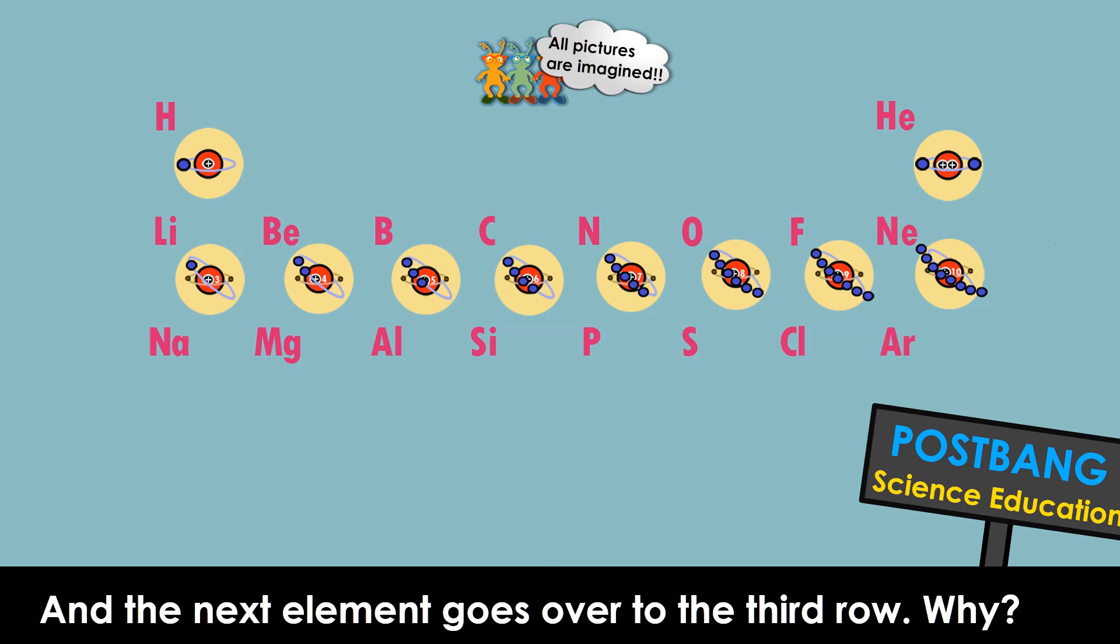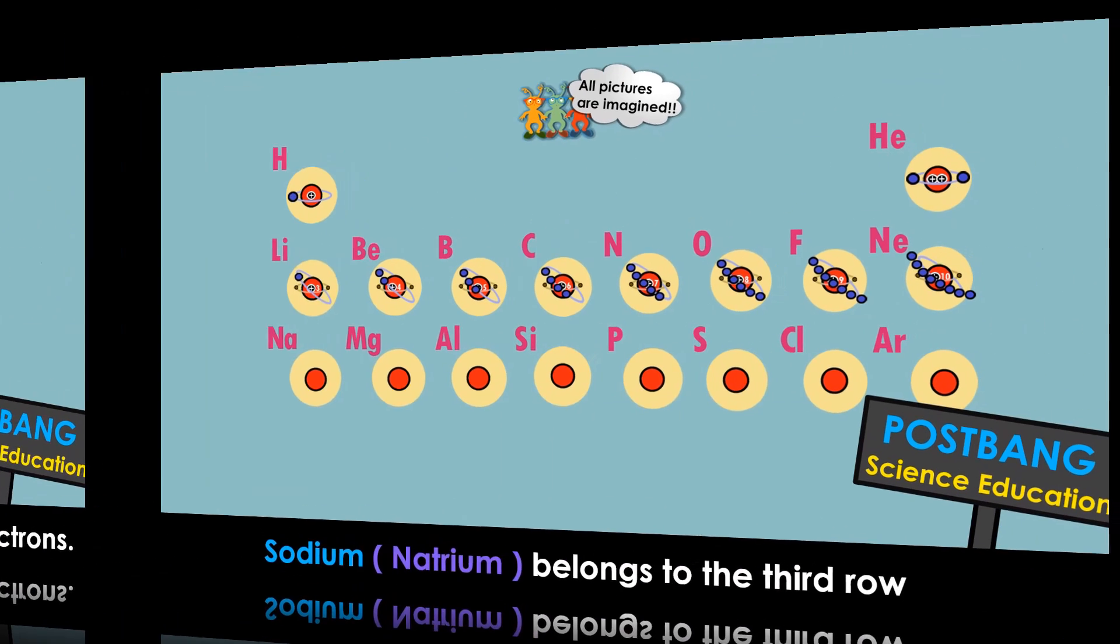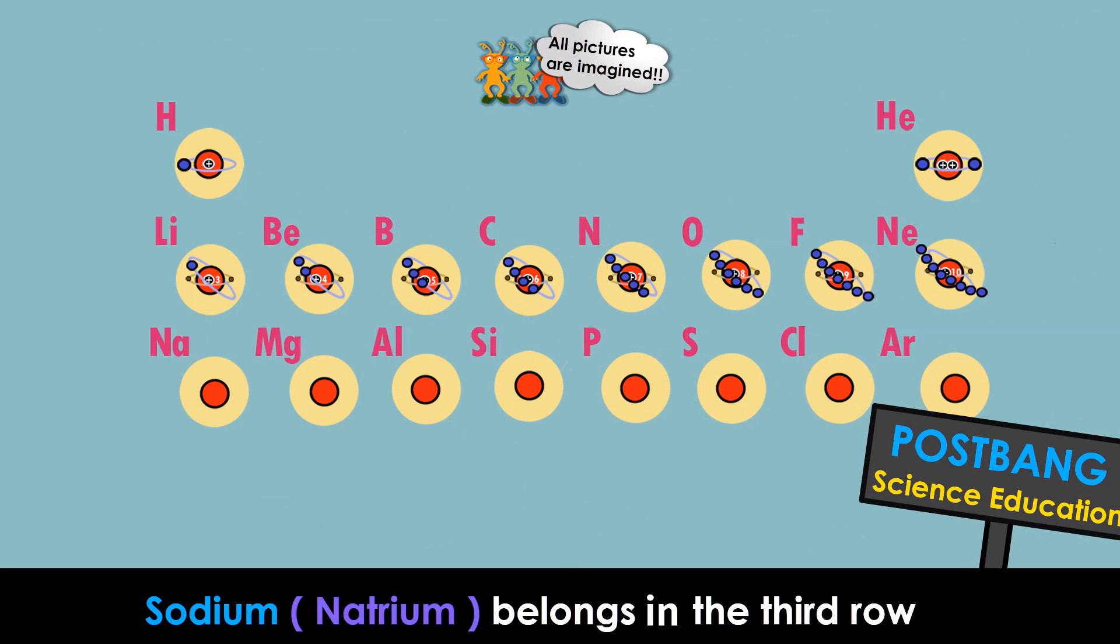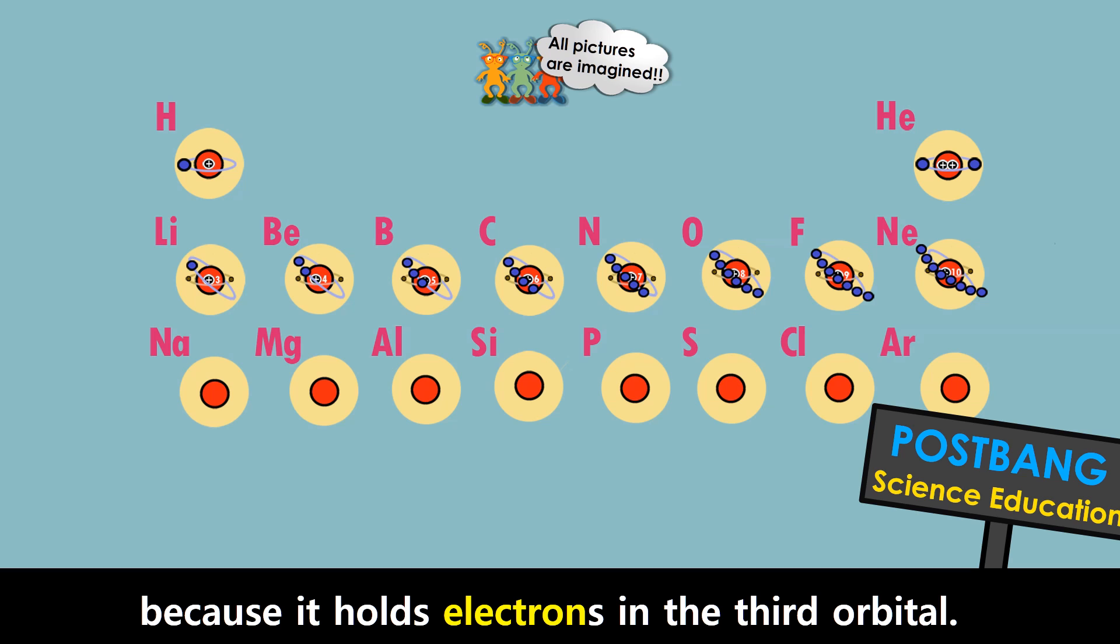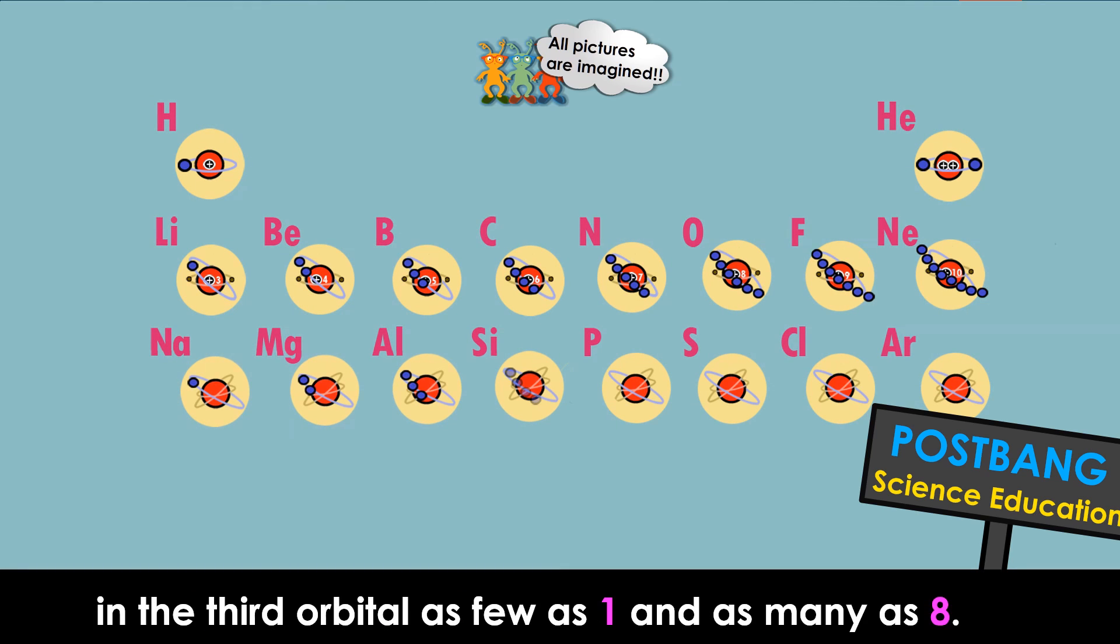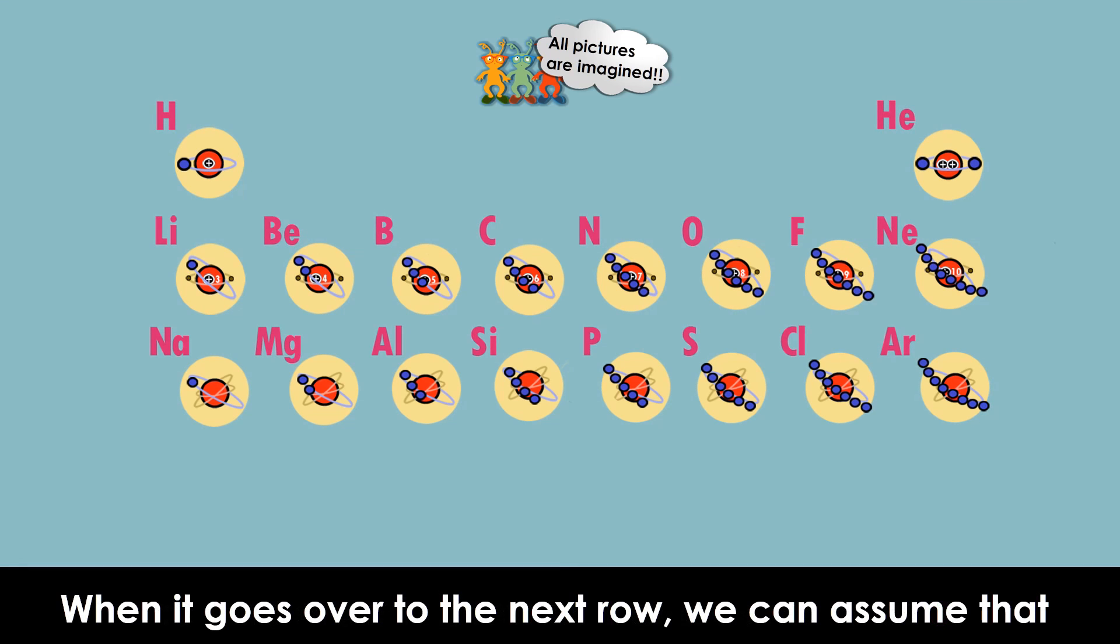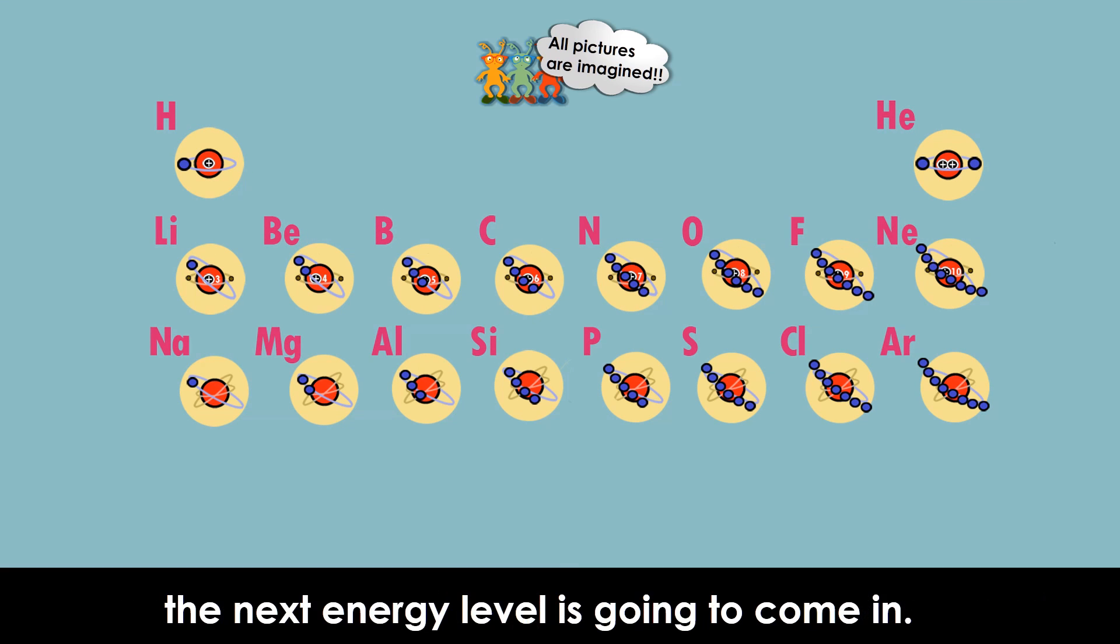And the next element goes over to the third row. Why? Because the second orbital can only hold up to eight electrons. Sodium belongs in the third row because it holds electrons in the third orbital. The elements in the third row hold electrons in the third orbital, as few as one and as many as eight. When it goes over to the next row, we can assume that the next energy level is going to come in.